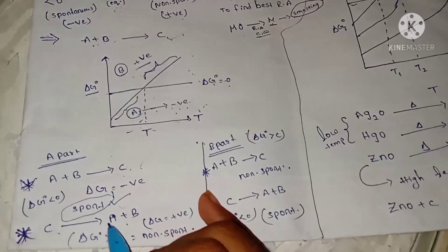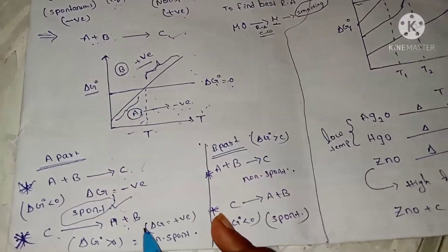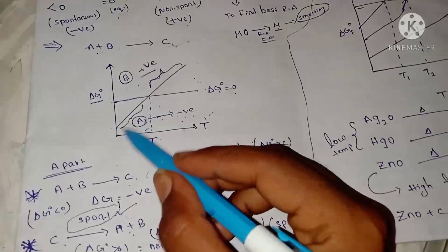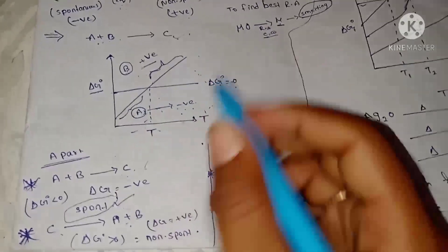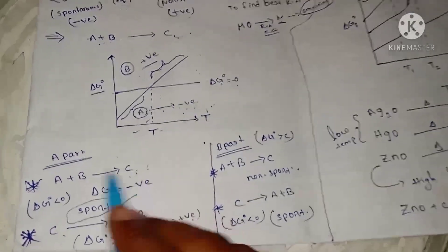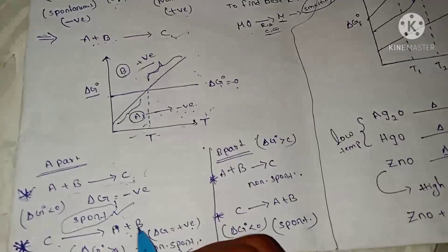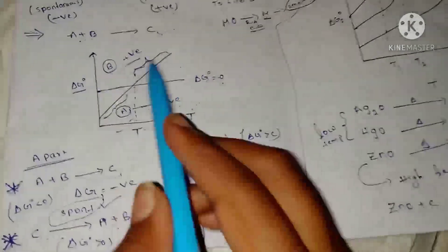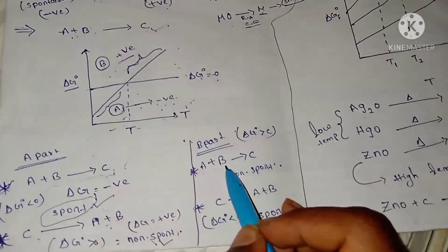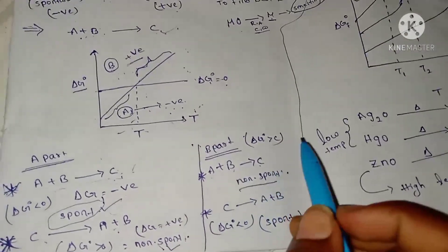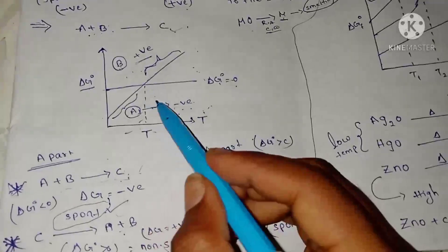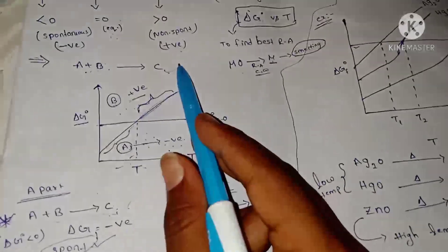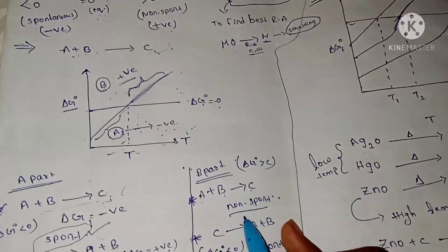Now let us look at the reverse condition: C gives rise to A plus B. Here, Delta G⁰ is positive. In Part B, the reaction A plus B giving C is non-spontaneous. When Delta G⁰ is positive, it is non-spontaneous and not feasible.